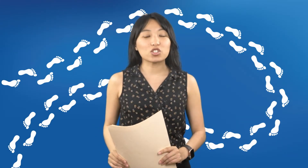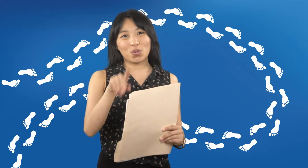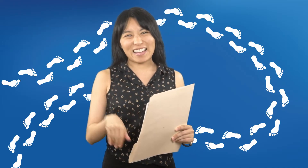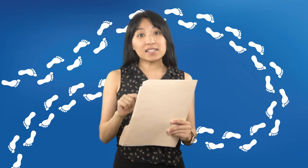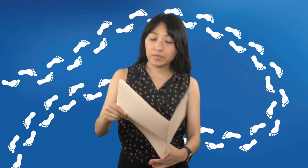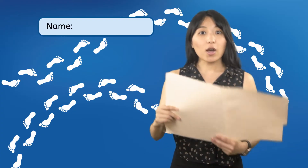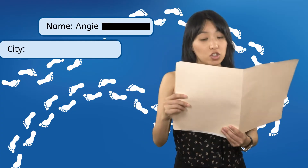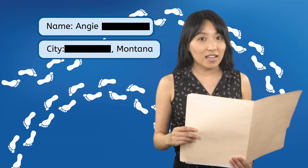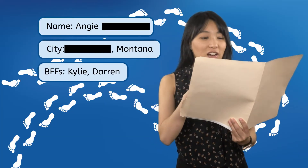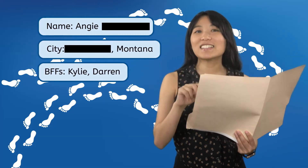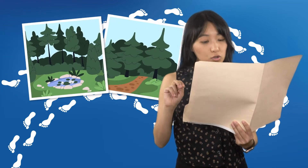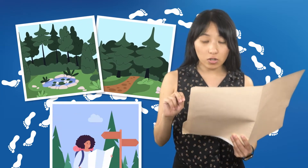Don't worry, this isn't your information — I shredded that. This data is about an anonymous person. From her social media, we know her name is Angie, she lives in Montana, and we know her best friends are Kylie and Darren. She mainly posts photos of nature.